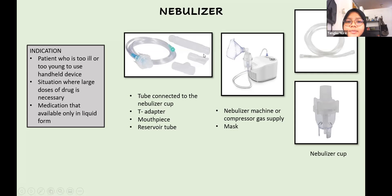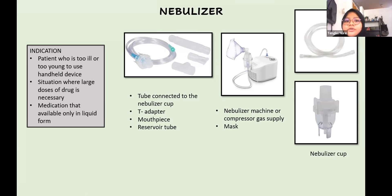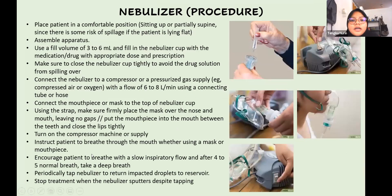The components of a nebulizer include: the compressor or pressurized gas supply, the connecting tube, the nebulizer cup for medication, and either a mouthpiece with T-adapter and reservoir tube, or a mask. The mouthpiece is more efficient for drug delivery — it has no leakage and no drug deposit on the face. The mask is easier for patients who cannot use the mouthpiece but is prone to leakage and less efficient, with drug potentially depositing on the face and nasal passages.